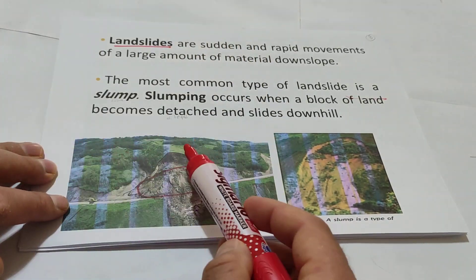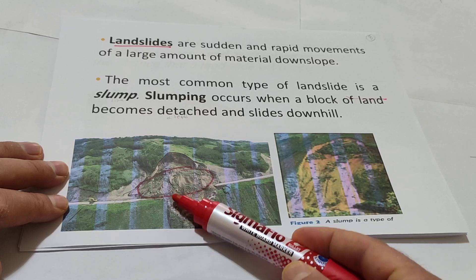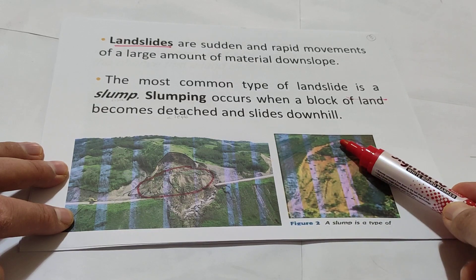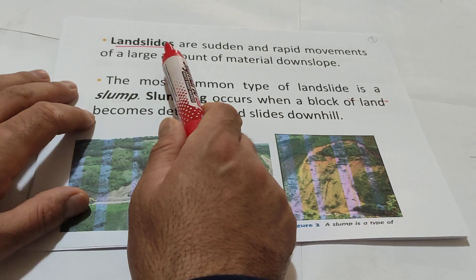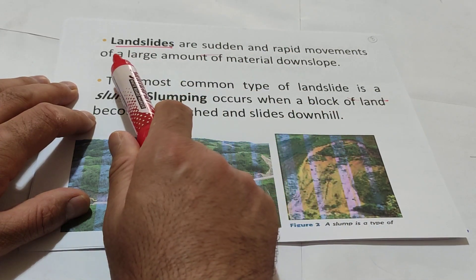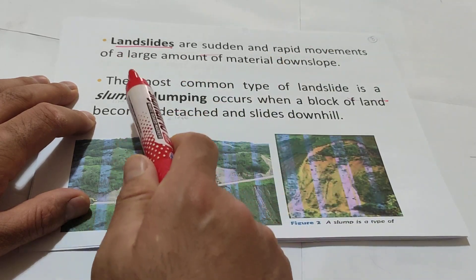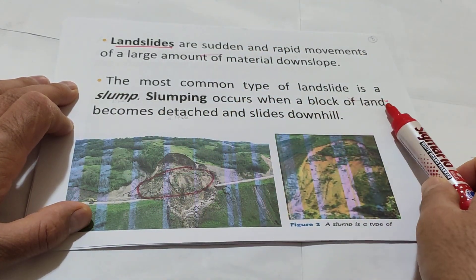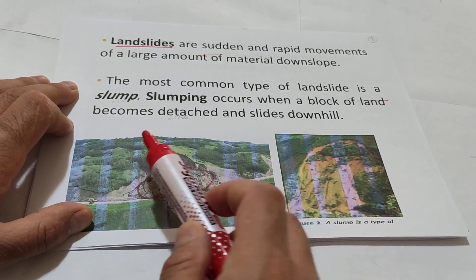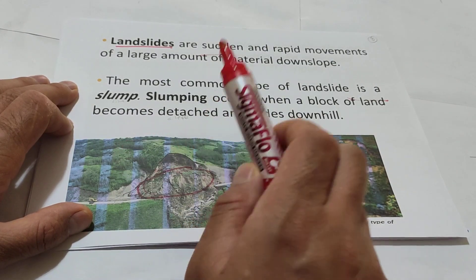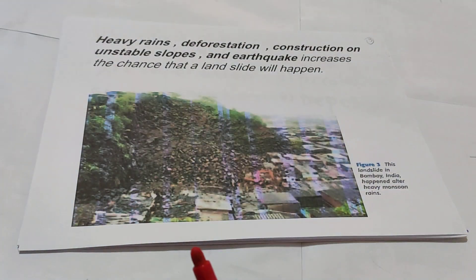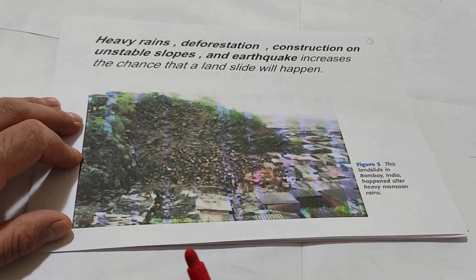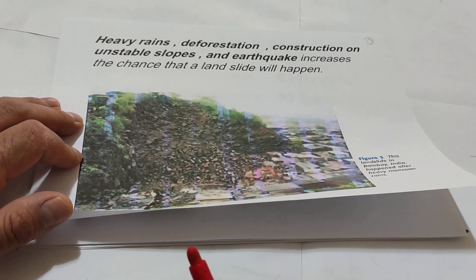Landslide. A part of land, as you see, moves from one place to another. As you see here, this one we call landslide. It has destroyed many plants and trees. Landslides are sudden and rapid movement of a large amount of material downslope. The most common type of landslide is a slump. Slumping occurs when a block of land becomes detached and slides downhill. Heavy rains, deforestation, construction on unstable slopes and earthquakes increase the chance that landslides will happen.